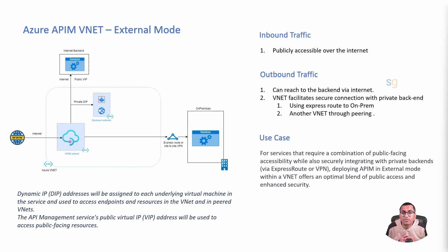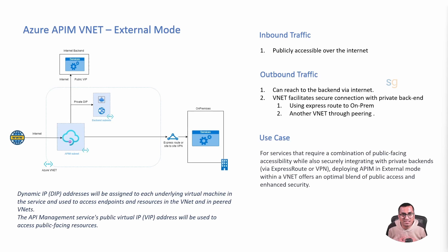For outbound traffic in external mode, it can reach public APIs and services over the internet. What makes external mode different is its capability to connect securely with private backend services. You gain much more flexibility and security options, including the ability to extend the network to on-premises resources. By establishing a VPN or ExpressRoute connection between the Azure VNet and your on-premises network, you can securely route API calls to internal systems that are not publicly accessible — very useful for businesses with a hybrid cloud strategy or those needing to integrate with legacy systems.